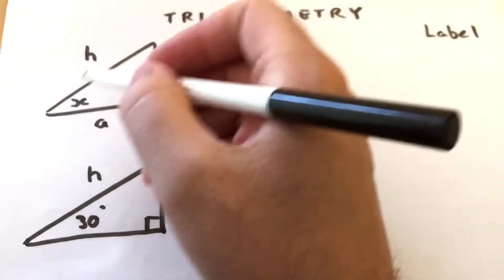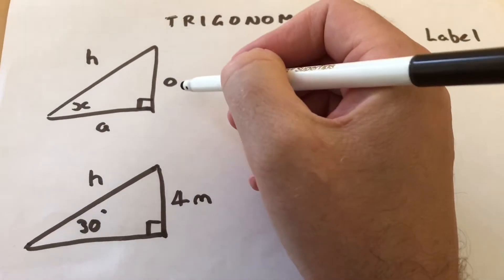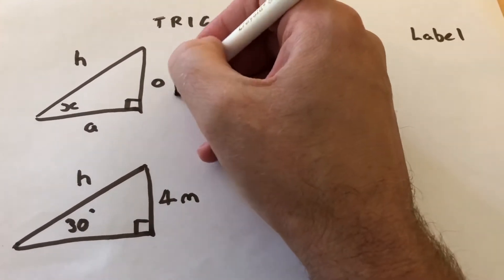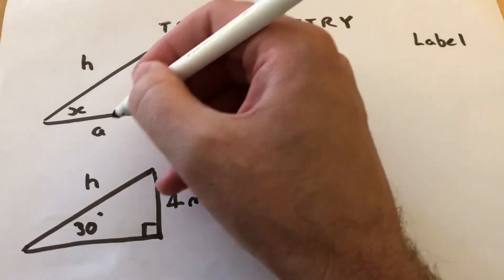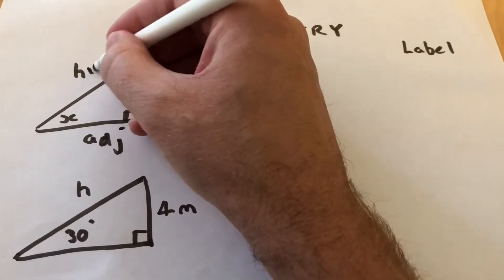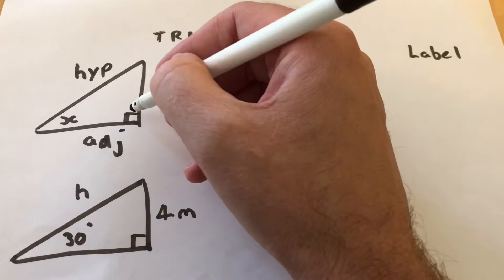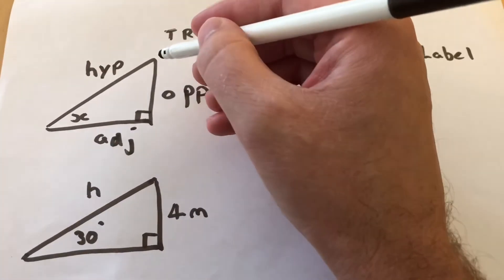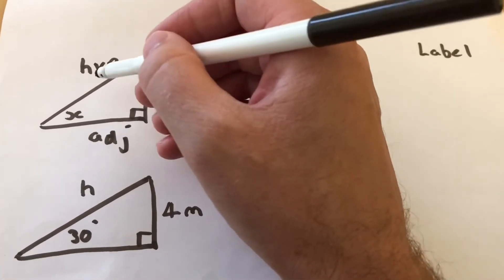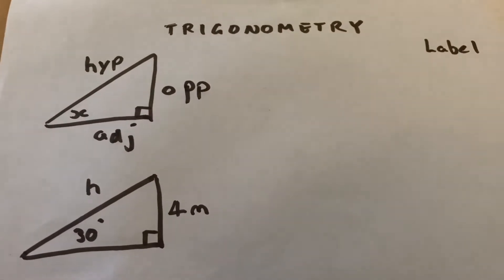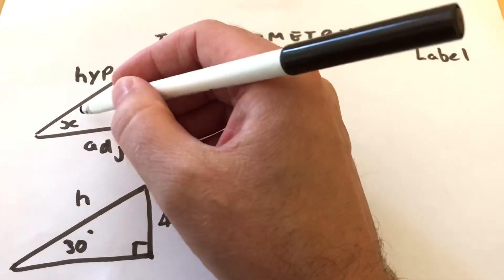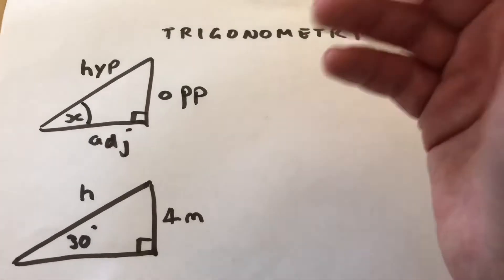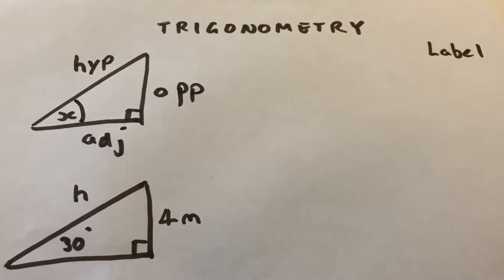We're looking at right angle triangles, and I've used O for the opposite, A for adjacent, and H for the hypotenuse. This one opposite the right angle, always the longest side in a right angle triangle. Using H but not confused with height, and that's all with respect to that angle there, often angle theta or any other label. In this case we're using X.